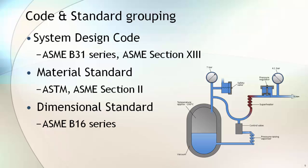The first is system design code. This category of code provides entire system design requirements. The ASME B31 series and ASME Section 8 are some examples of system design codes. The second is material standard, which provides standard material grades that can be used in the manufacturing of piping components or any other systems. ASME Section 2 covers various acceptable material grades that can be used in system design.